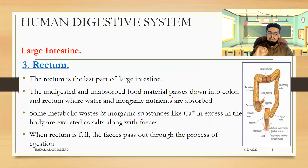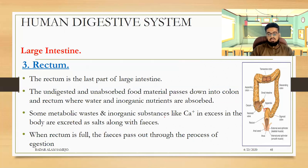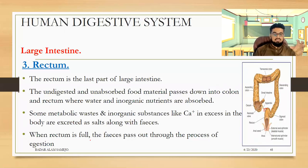The undigested and unabsorbed material passes down into the colon and rectum where water and inorganic nutrients are absorbed. Some metabolic waste and excess inorganic substances like calcium are excreted as salts along with feces. When the rectum is full, a reflex goes to the brain and signals that defecation is needed.